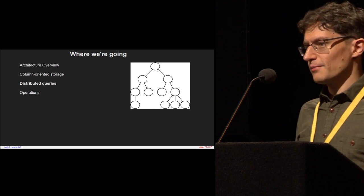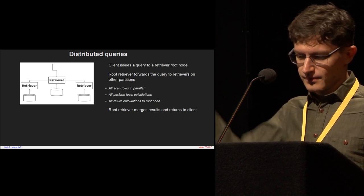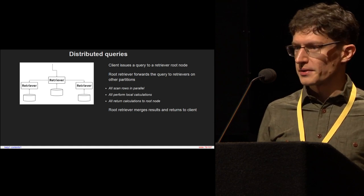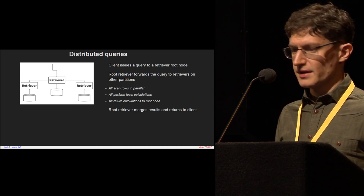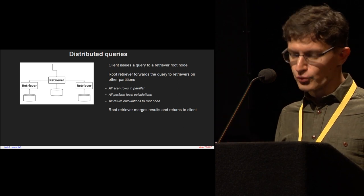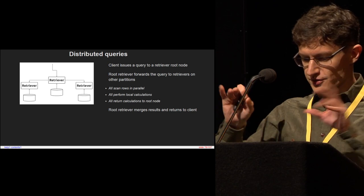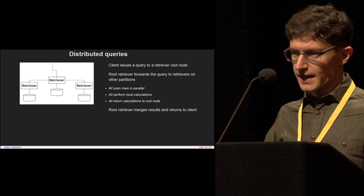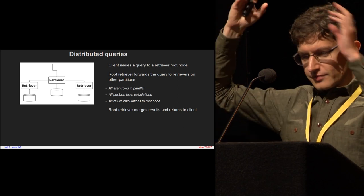That's how we read data from a single node. But we speed things up by fanning out queries. In a distributed query, a client will pick a Retriever node to query. The client knows which data set it's querying, and each data set is assigned to certain partitions. The client picks one of those nodes consuming on that partition and sends the query. We don't have a static structure of which nodes are roots — we just pick one. Then the root fans out the query to the other nodes on the same partition. Every node scans the rows it has in parallel, performs calculations on the subset of data it has, and returns the calculations back to the root, which does a merge and sends the query result back.